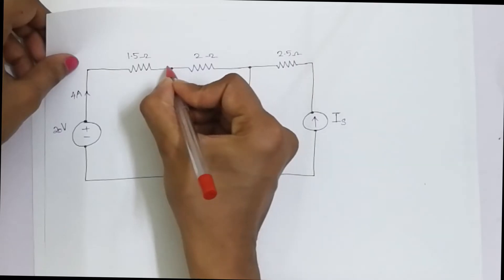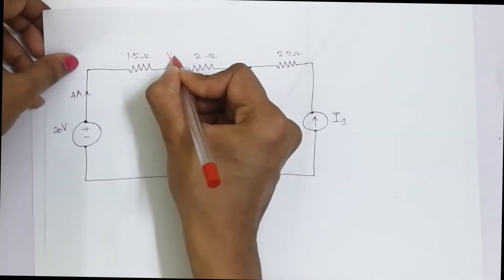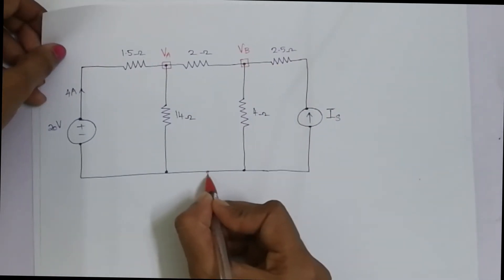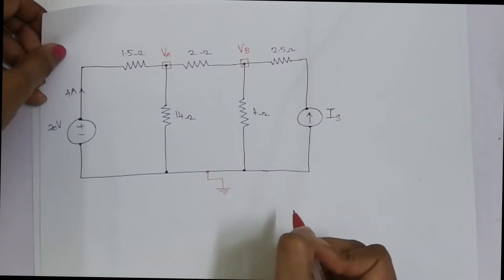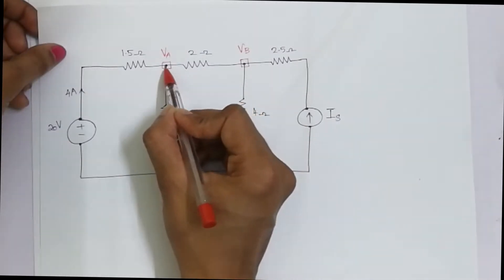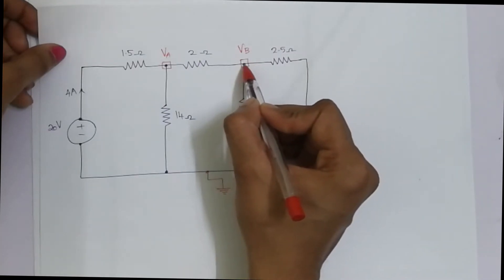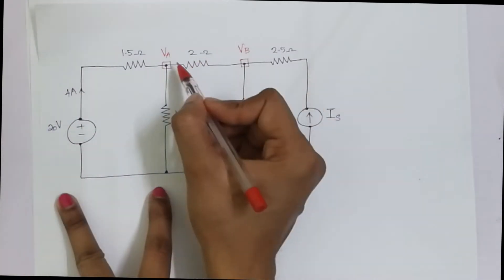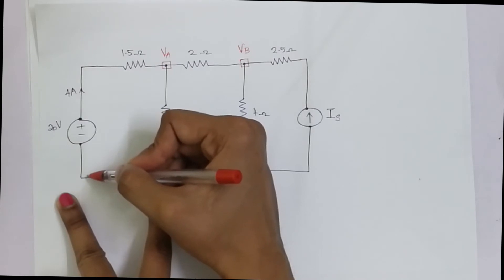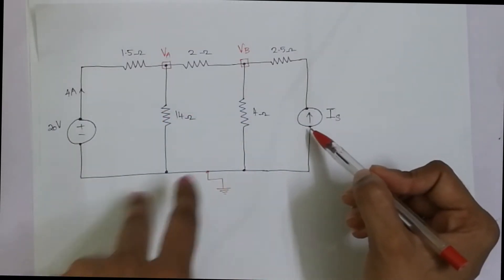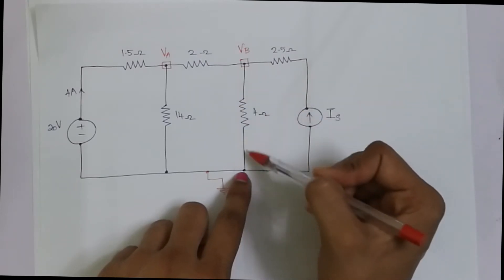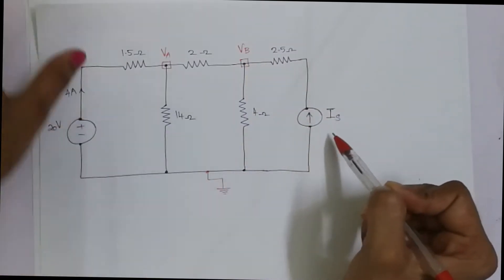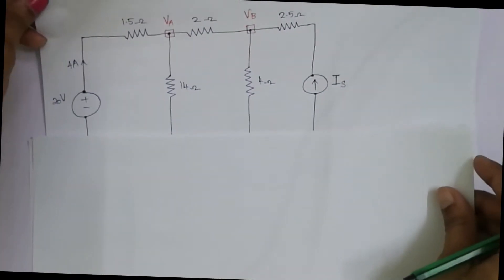Let's get started. Let me label this as VA and this as VB. We have three nodes here. This is our reference node or ground node, this is the voltage at node VA, and this is the voltage at node VB. Between VA we have two sets of elements: one is the 14-ohm resistor and the resistor in series with the 20-volt source. At the second node we have two resistor paths — one is the 4-ohm resistor and the other is the 2.5-ohm in series with the current source IS. Our aim is to find IS.